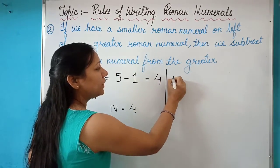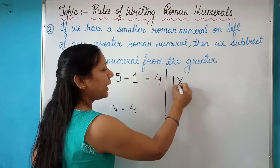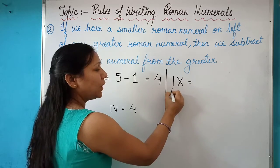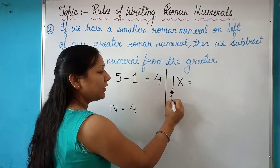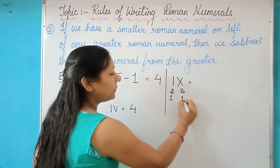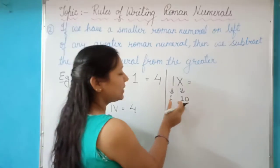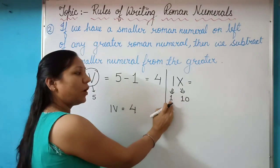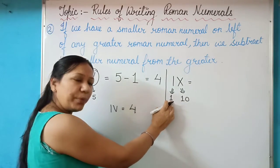Similarly, if our digit is IX. I represents 1 and X represents 10. Once again, we can see that there is a smaller numeral left to the bigger one.